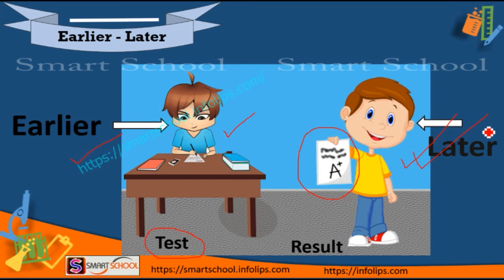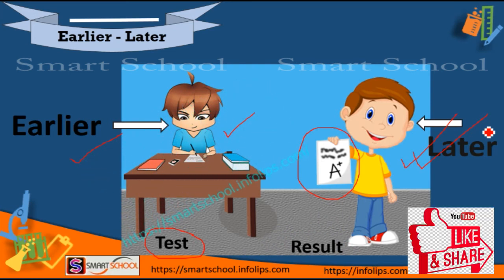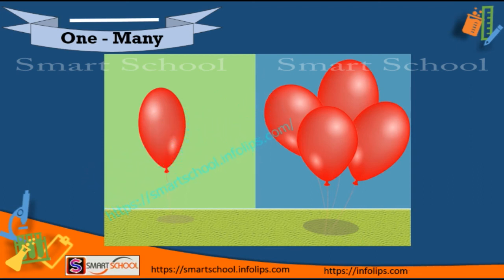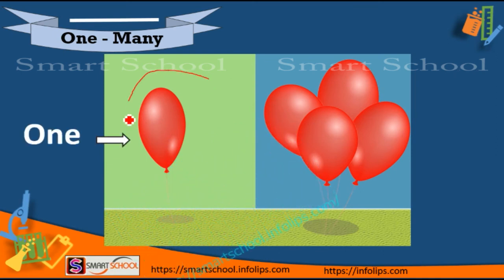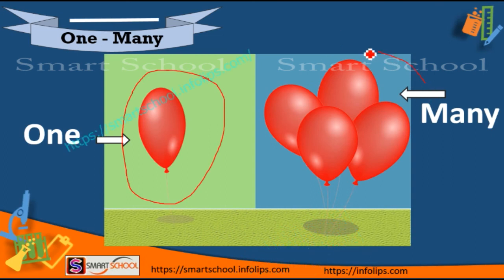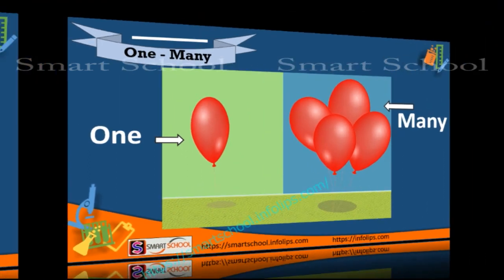I hope you understand what is earlier and what is later. Now we will see one and many. Tell me which picture has one and which picture has many objects. The first one is one balloon and the second picture has four balloons, so those are many.